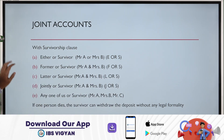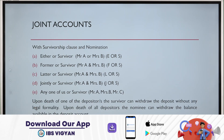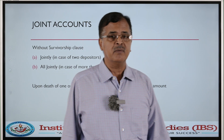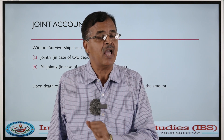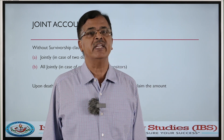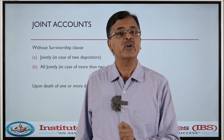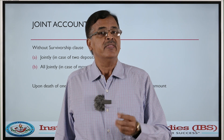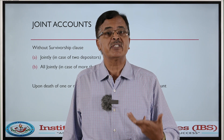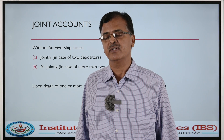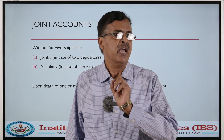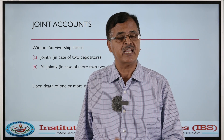Another mode of operation is without survivorship clause. You can open a bank account without a survivorship clause, but there is a problem. Suppose something happens to one person — the surviving person, along with the legal heirs of the deceased person, should approach the bank for getting the money back. The survivor alone cannot do anything because there is no survivorship clause attached at the time of opening the account.